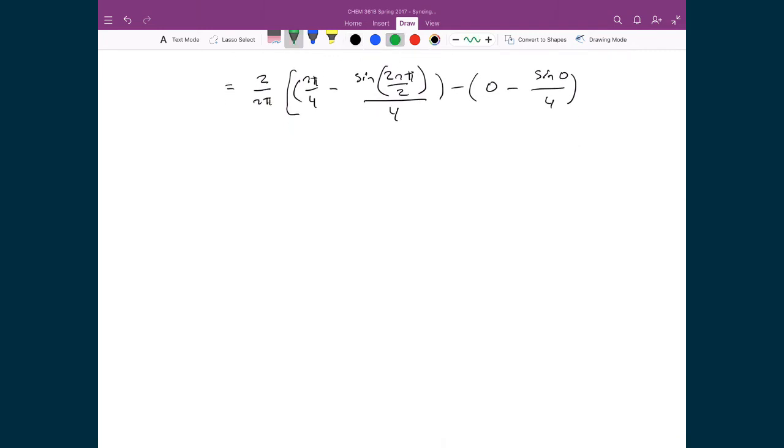Many of these terms are going to disappear immediately. On the right-hand side I have 0, and sine of 0 is 0. Here I'm going to have the sine of n pi, because I can cancel out the 2 on top and bottom. The sine of an integer multiple of pi is 0. So I'm left with 2 over n pi times n pi over 4. I can cross off the n pi's, leaving 2 over 4, or 1 half. The probability of finding the particle in the first half of my box is 1 half, or 50%.